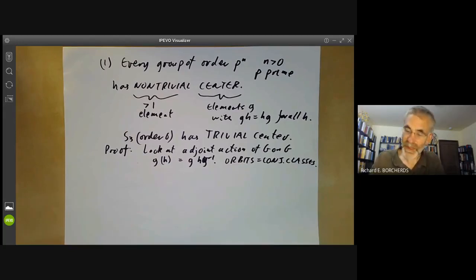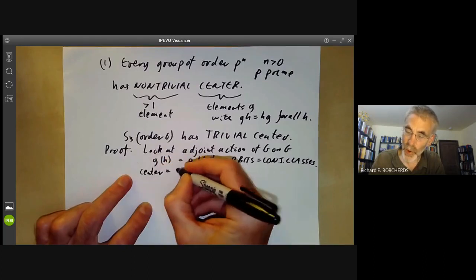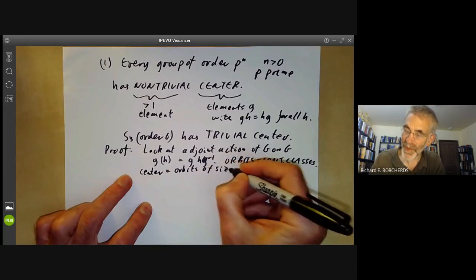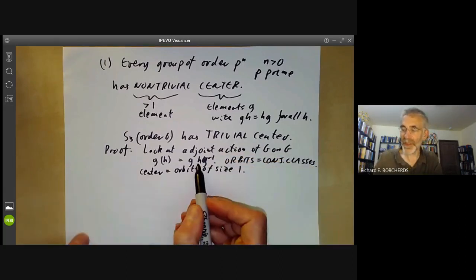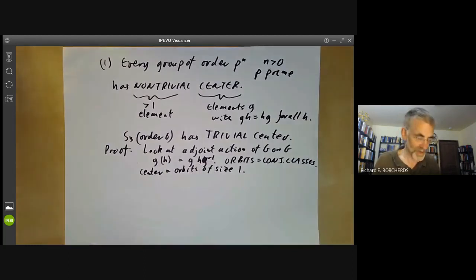And the orbits are the same as conjugacy classes. And the orbits of size, the centre is just the orbits of size 1. Because saying an orbit is of size 1 just says that G of H is equal to H for all H, which just says that H commutes with G.